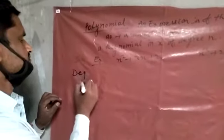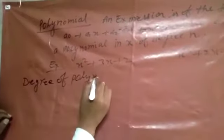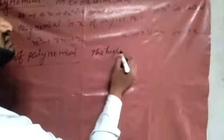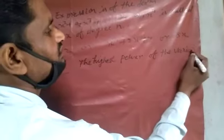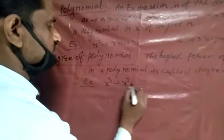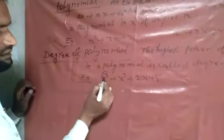Degree of Polynomials: the highest power of the variable in a polynomial is called the degree of the polynomial. Example: x cubed plus x squared plus 2x plus 5 — here the highest power of the variable is 3, so the degree of the polynomial is 3.